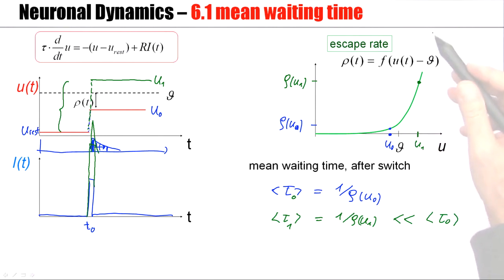This rapid increase guarantees that the waiting time until spike firing is really short if we are way above threshold.